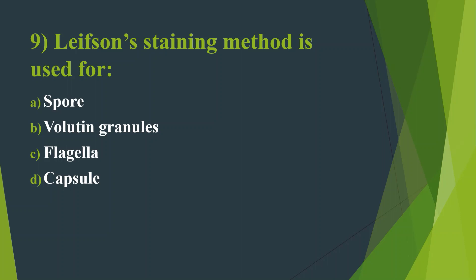Ninth question: Leifson's staining method is used for — Option A: Spore. Option B: Volutin granules. Option C: Flagella. Option D: Capsule. Here the answer is Option C, Flagella. Spore staining is known as the Schaeffer-Fulton method, using malachite green as the stain. Volutin granules can be detected by Albert staining. Capsule can be detected by the India ink method.